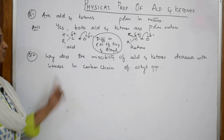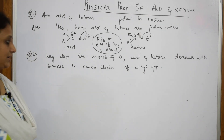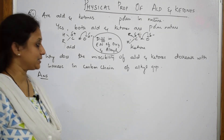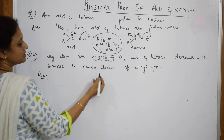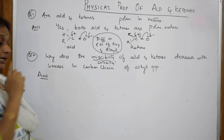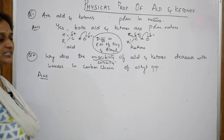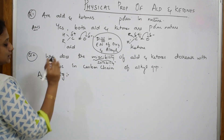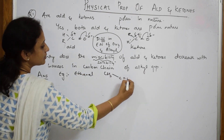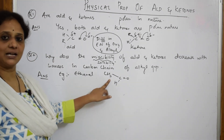The next question: why does the miscibility of aldehyde and ketone decrease with increase in carbon chain of the alkyl group? When starting such answers, first give an example and then explain. Miscibility is nothing but solubility. As the number of alkyl groups increases, the solubility decreases. For example, ethanal (CH₃CHO) is easily soluble in water because of the less bulky alkyl group.